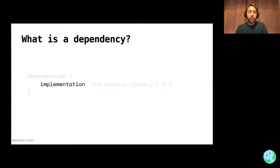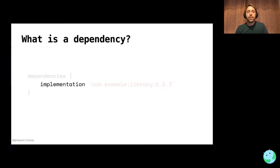In Gradle, the dependency block is a project delegate to the dependency handler, which actually implements the declaration of dependencies. You have what is called the configuration. Most commonly we use things like implementation, API, and compile only. A configuration represents the scope of a dependency — behind the scenes it forms the inheritance hierarchy of your application, essentially building the graph of your dependencies within the app.